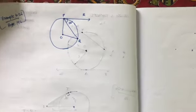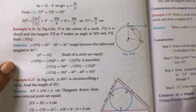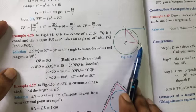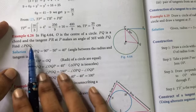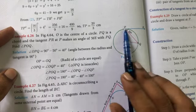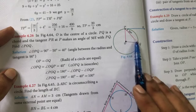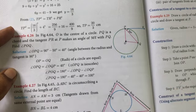Now let's look at Example 4.26 from your textbook. O is the center of the circle, PQ is a chord — a line joining two points within the circle — and tangent PR at point P makes an angle of 50 degrees with PQ. Find angle POQ.